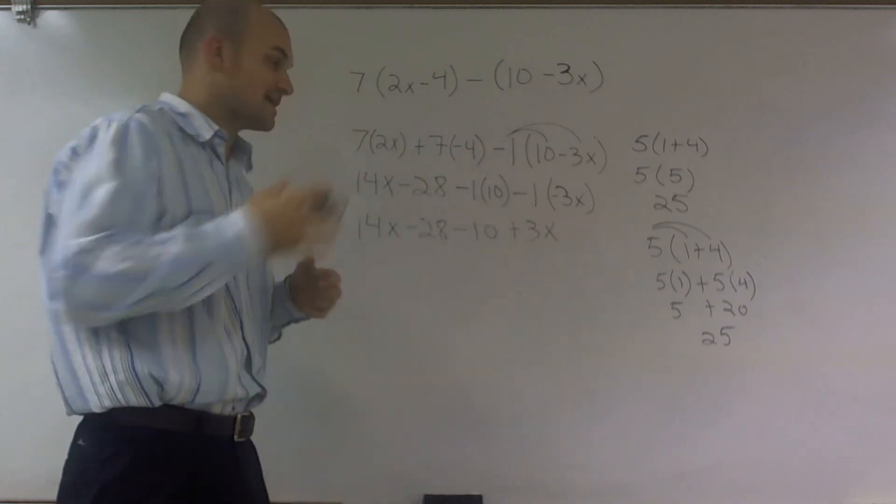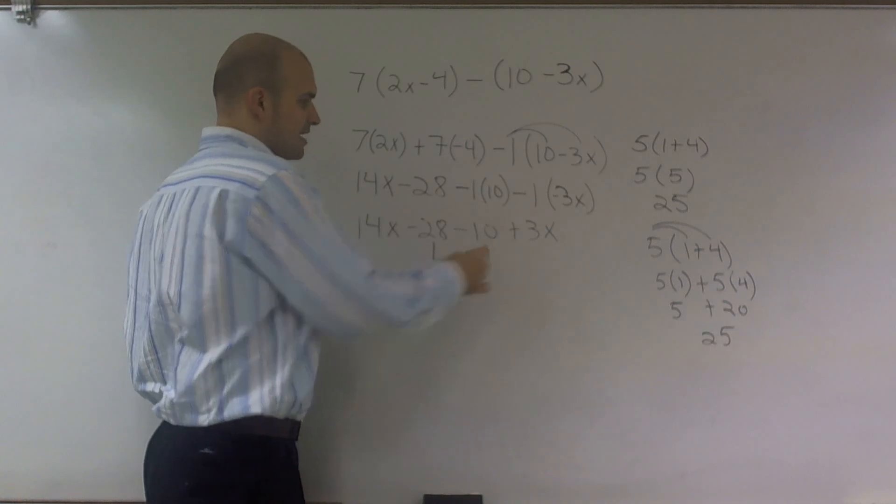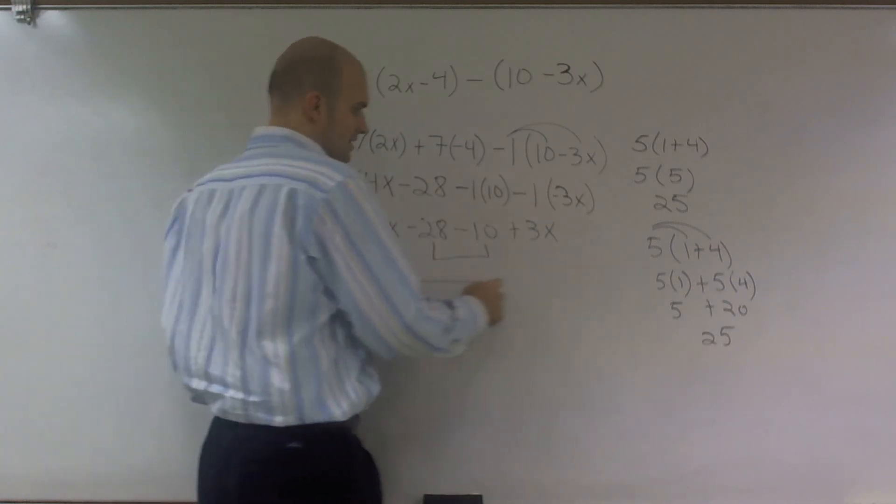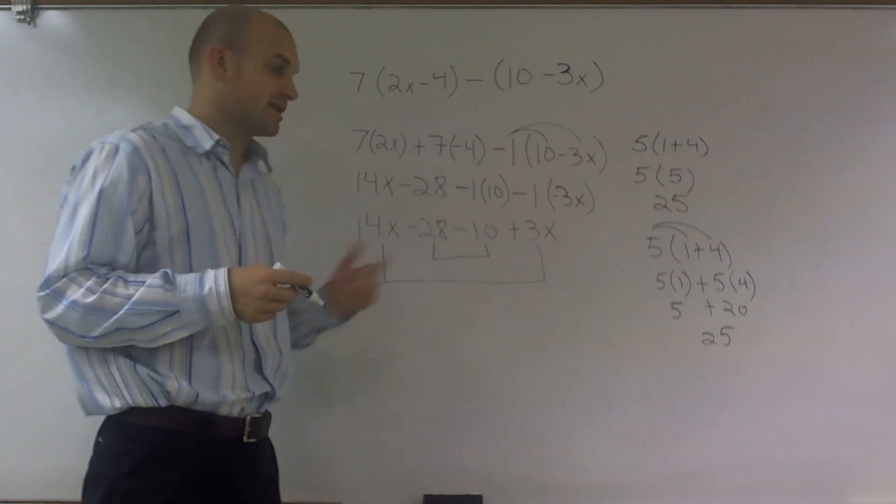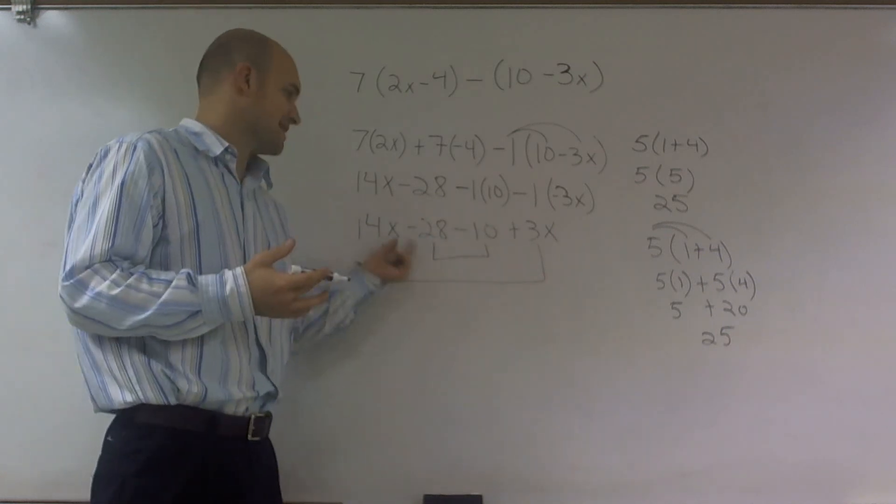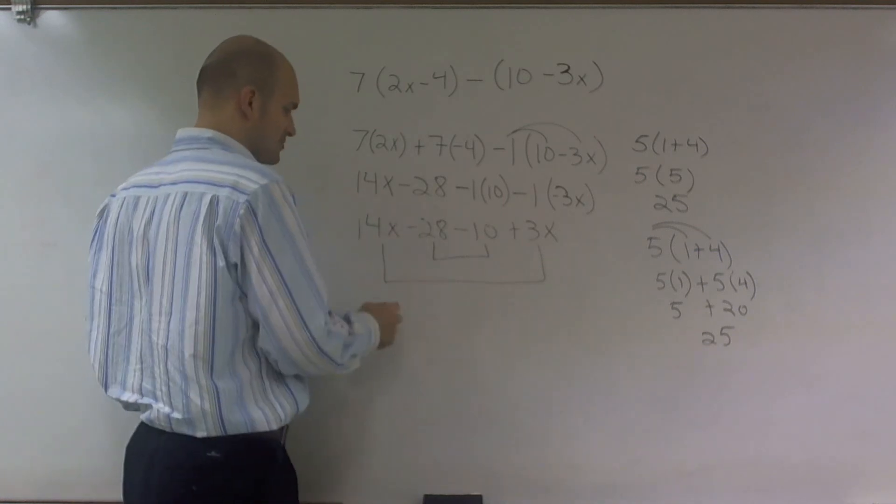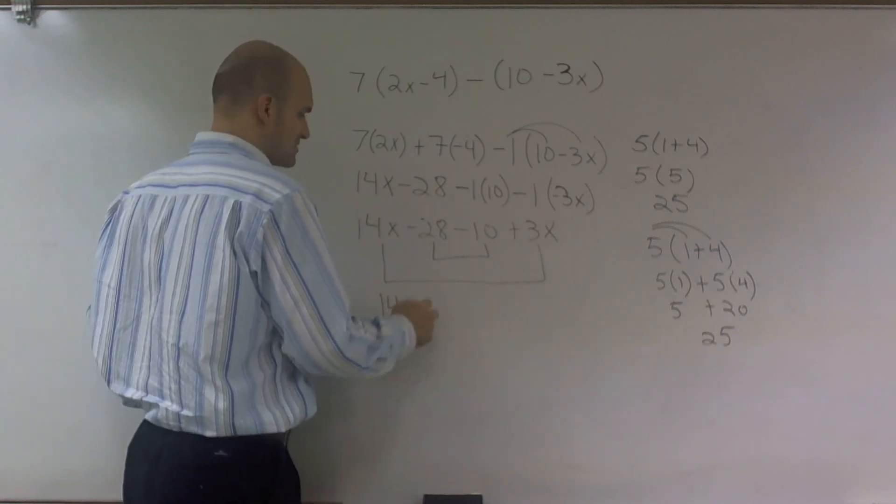Now, I need to see what numbers I can combine. Obviously, a number and a number you can combine. And a number multiplied by a variable and a number multiplied by a variable—as long as the variables are the same and they're in the same degree, which would be 1, then you can combine them.